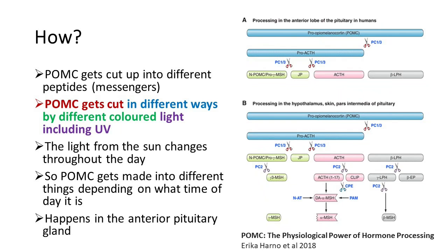So how does POMC do this? Depending on what color light is in your environment, POMC gets cut up in different ways. For example, in the morning at sunrise there's a lot of red light, violet light and a particular balance of blue light — this combination causes POMC to be cut up in a certain way making certain products. Then as the sun moves around, the light changes and the UVA and UVB rise, causing POMC to be cleaved differently — that's when we make the enkephalins. Basically POMC is a sensor that, based on light from the sun at whatever time of day, can be chopped up to make the appropriate peptides at the appropriate time.